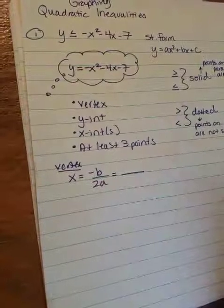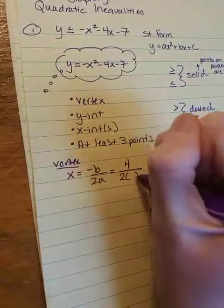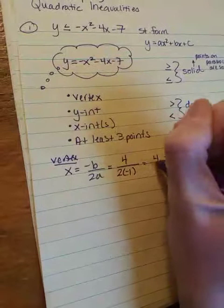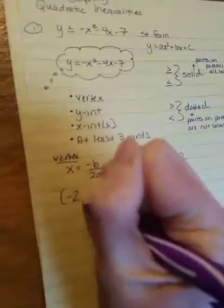So negative b, well, b is negative 4, so negative b is going to be 4, and a is negative 1. So this is 4 over negative 2, so my x of the vertex is negative 2.